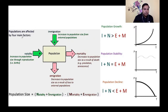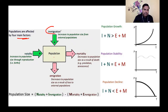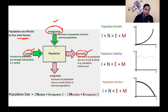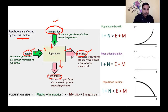Populations are affected by four main factors: natality, mortality, immigration, and emigration. Natality and immigration together increase population size, while mortality and emigration together decrease it. For example, if births are high, natality increases population; deaths due to senescence, predation, or disease increase mortality. The net effect of these four factors determines population growth.